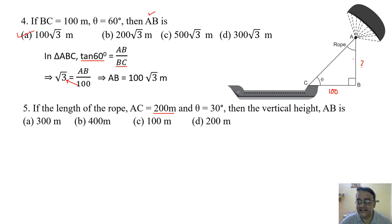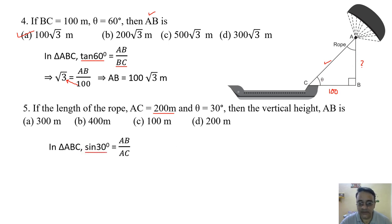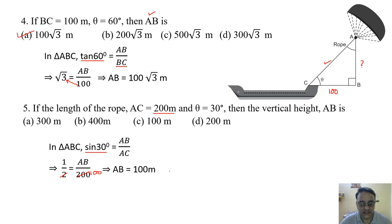Question 5: If the rope AC = 200 meter and θ = 30°, find vertical height AB. Hypotenuse is given and we need opposite, so we use sin 30° = AB/AC: 1/2 = AB/200. Therefore AB = 100 meter. The correct option is option C.